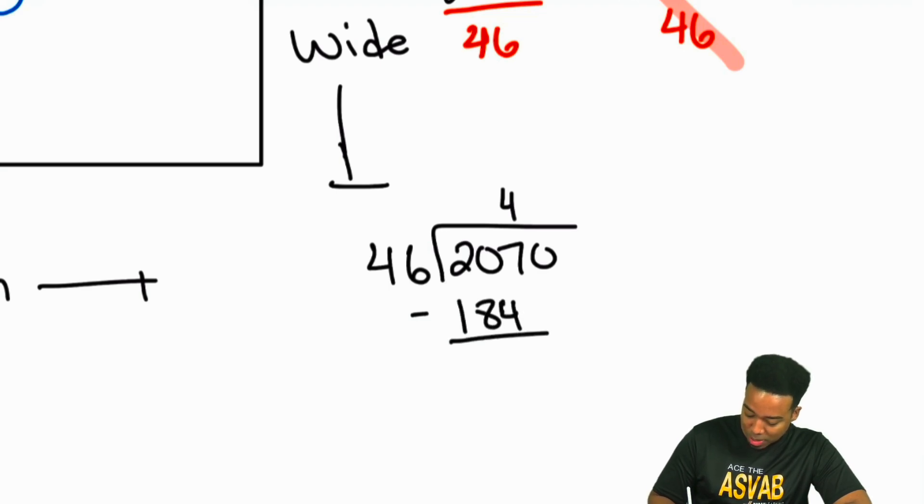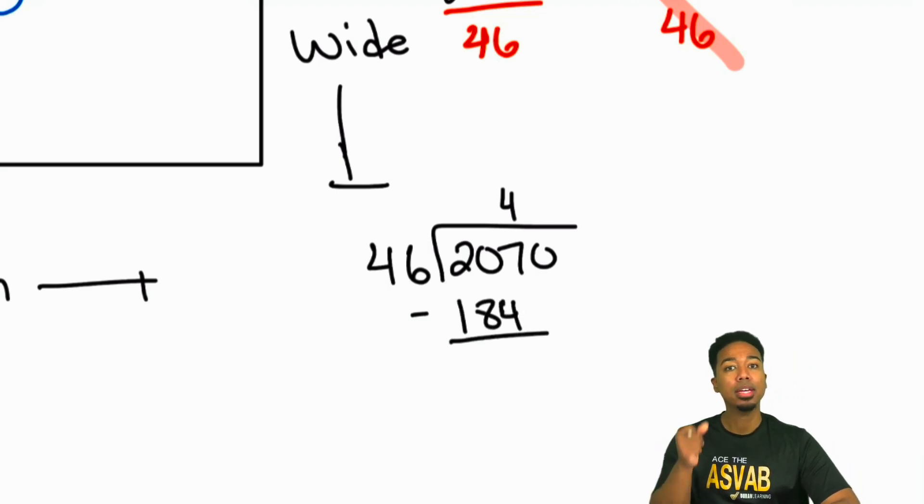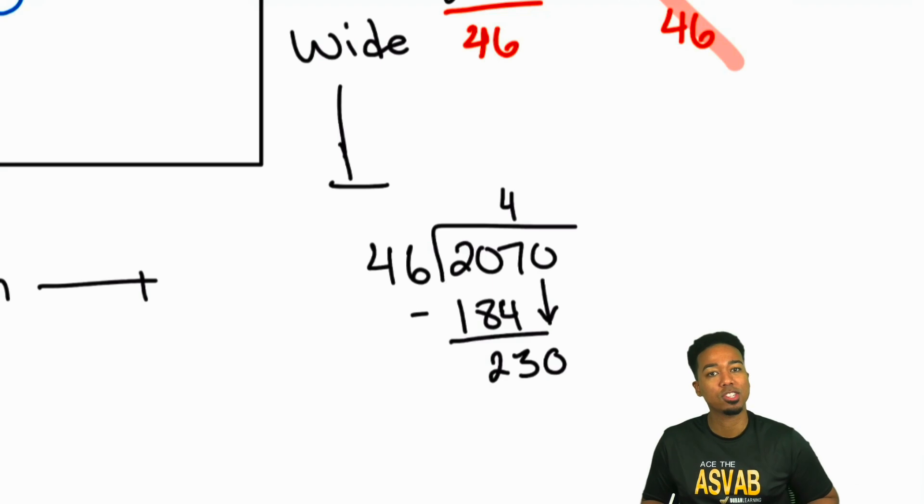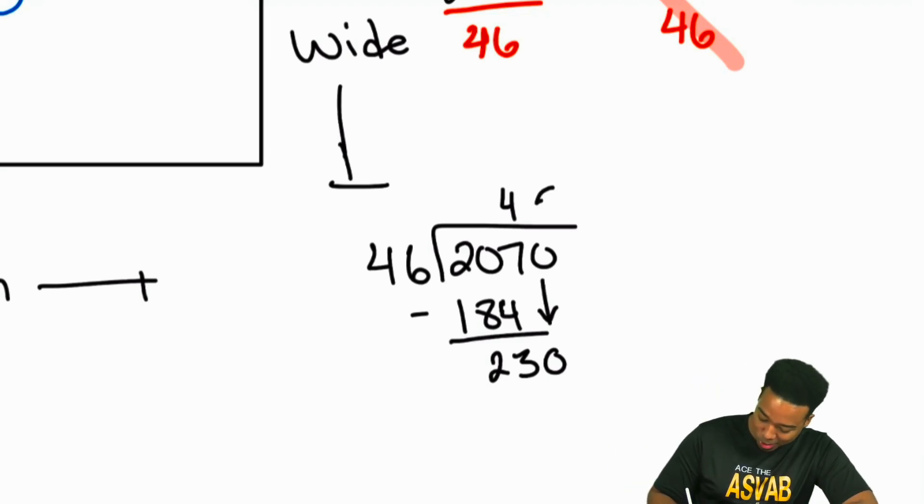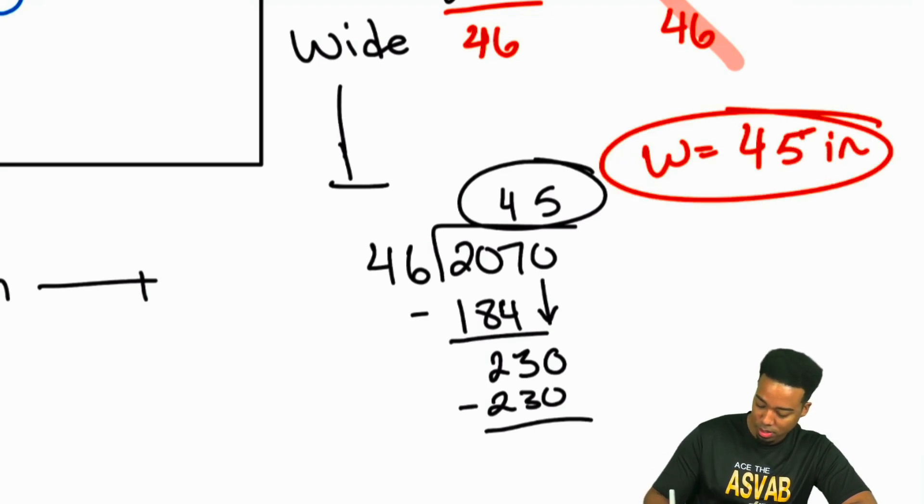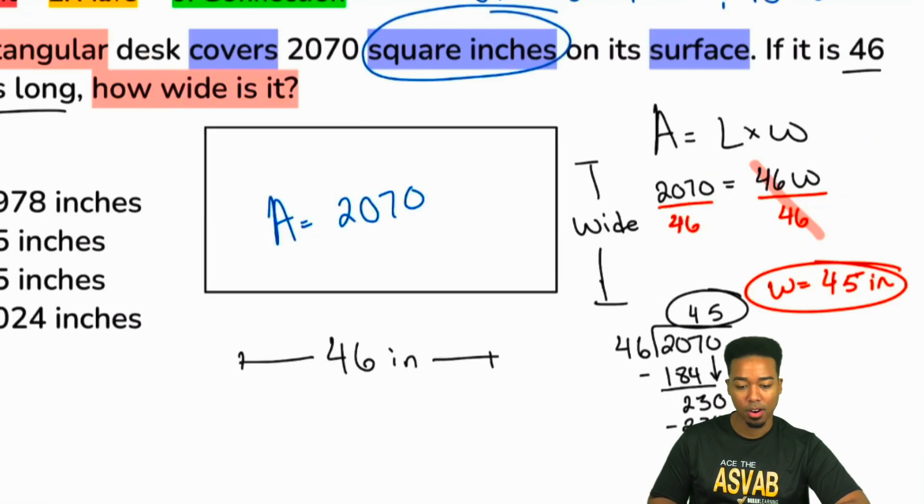Again, you have got to be comfortable doing quick math in your head. So here, 207 minus 184. What did that give us? Well, that'll give us 23. Then once we're here, we dropped that zero. And what did we just say 46 times 5 was 230. So booyah, we're good. Subtract 230. That's a perfect 230. And there it is. We have a width of 45 inches. And there we are. Boom.